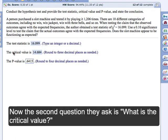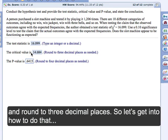Now the second question they ask is, what is the critical value? And we round to three decimal places. So let's get into how to do that.